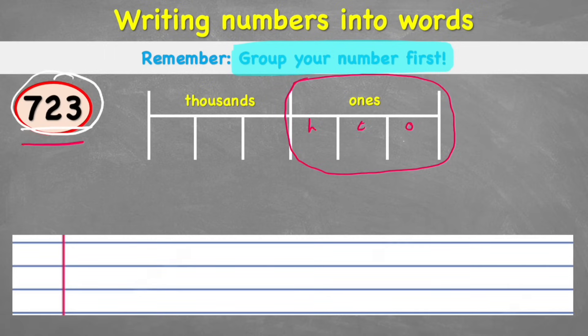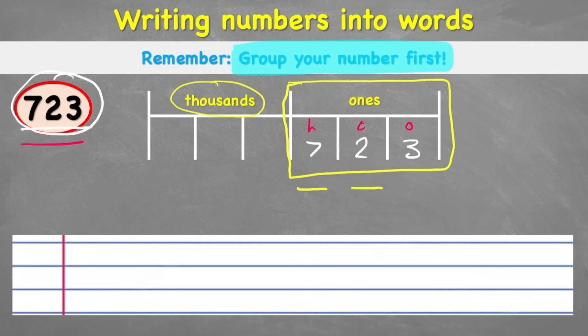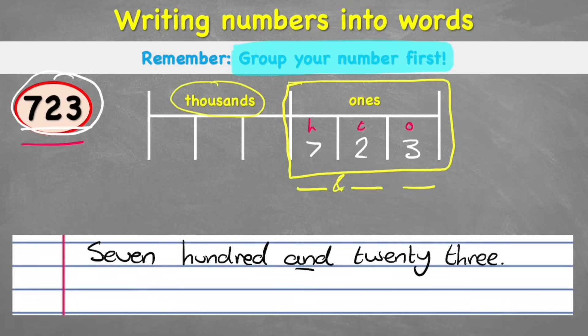So in 723 I can see I have 3 ones, 2 tens and 7 hundreds. And because we're only in this first block, we don't need to think about thousands at the moment. So we can simply say what we see. So I have 723. I'll put this little and symbol to remind me there's an and there. So when writing this number into words, all I would have is seven hundred and twenty-three. A simple one to get us started.